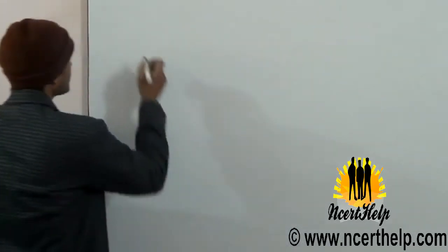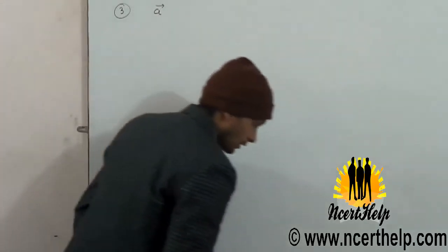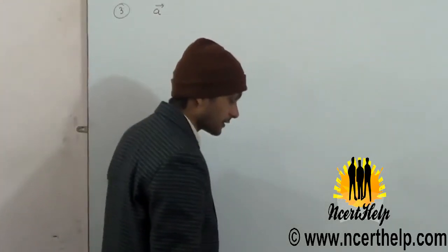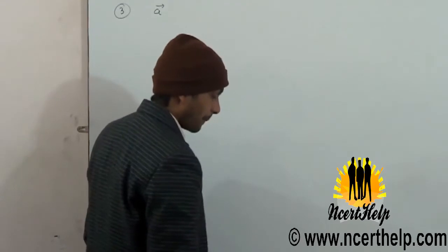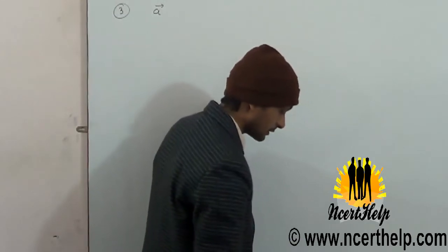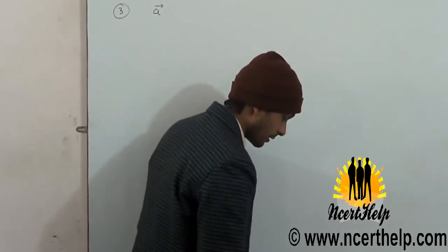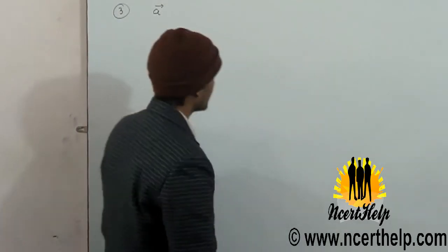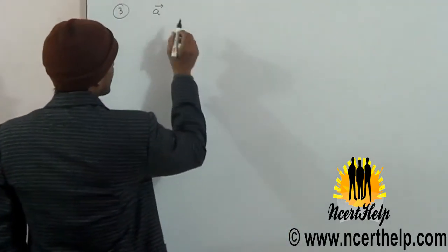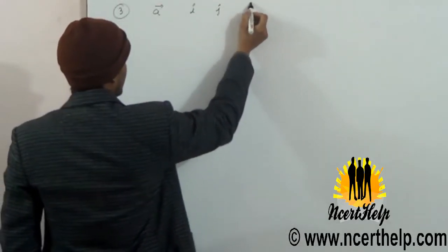The third question: find a unit vector A which makes angle π/3 with i, π/4 with j, and acute angle θ with k. Find θ and hence the components of the vector.